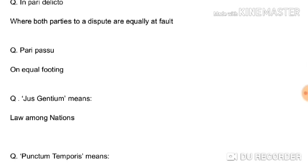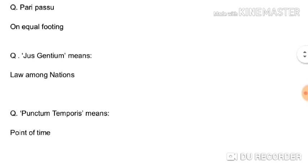In pari delicto is also very important — it applies where both parties to a dispute are equally at fault. Sometimes plaintiff A comes before the court and defendant B comes in his defense, but the court finds that both party A and B are equally at fault. This terminology is called pari delicto. Pari passu means on equal footing.